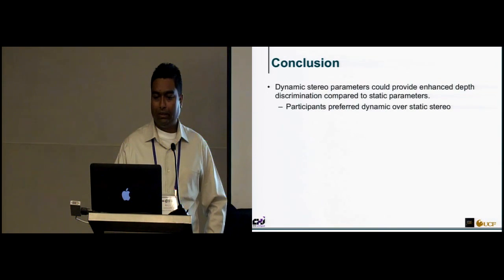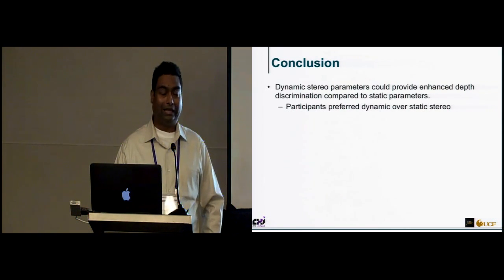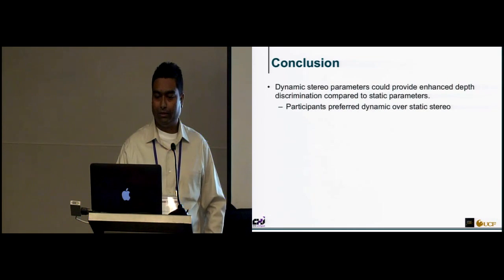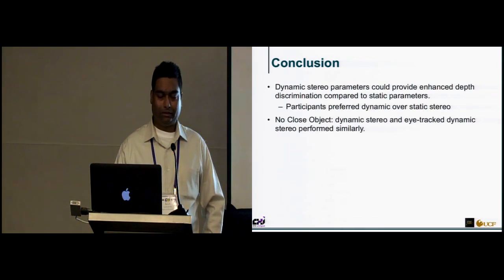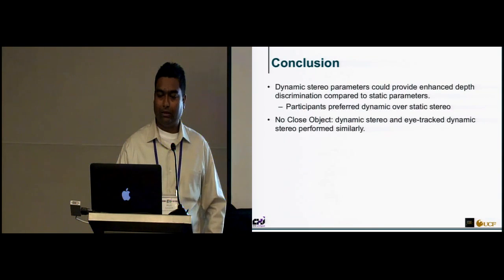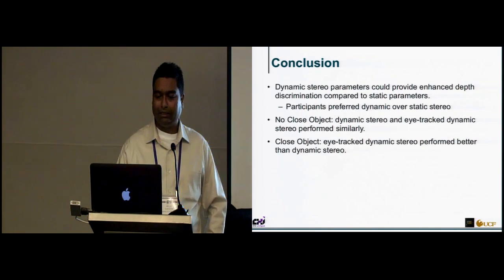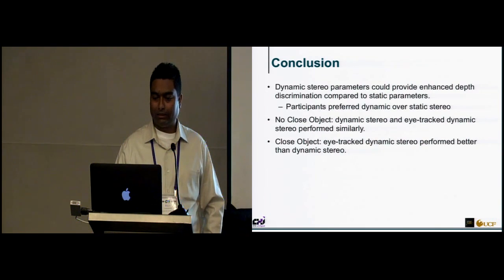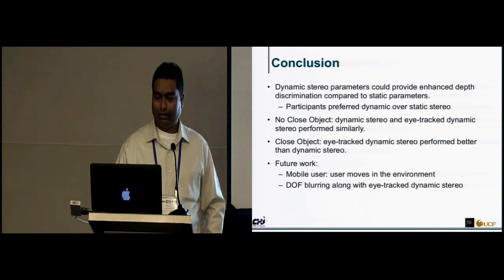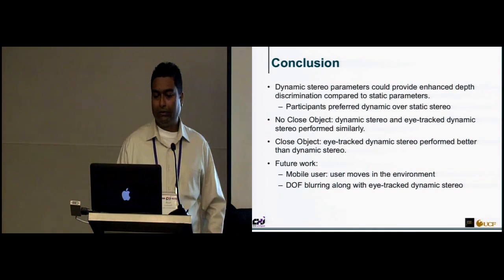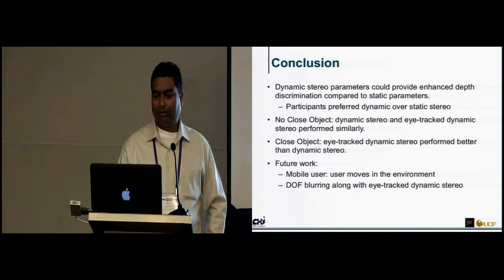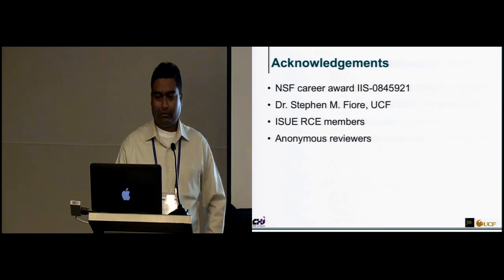In conclusion, dynamic stereo parameters provided improved depth discrimination compared to static stereo. Participants preferred dynamic over static. When there was no closer object, dynamic and eye-tracked dynamic stereo performed similarly. When there was a closer object, eye-tracked dynamic stereo performed better. Future work includes exploring what happens when the user is moving in the environment, and exploring depth of field blurring along with eye tracking. We acknowledge NSF and our lab members.